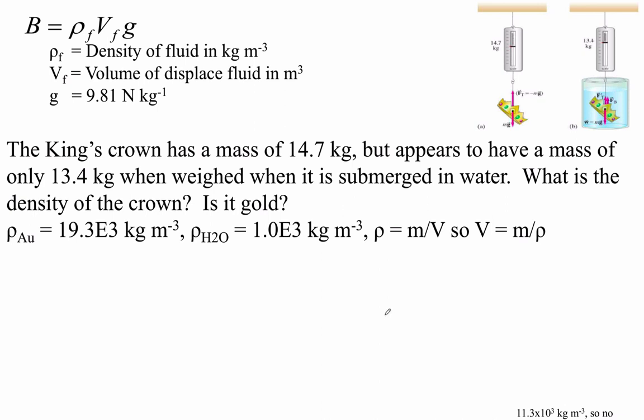All right, let's see. The king's crown has a mass of 14.7 kilograms, but appears to have a mass of only 13.4 kilograms when weighed when it is submerged in water. Oh, look at that. It's even there. What is the density of the crown? Is it gold?